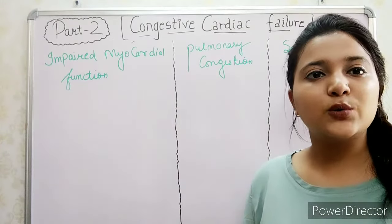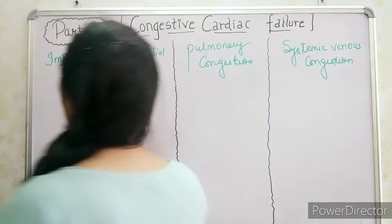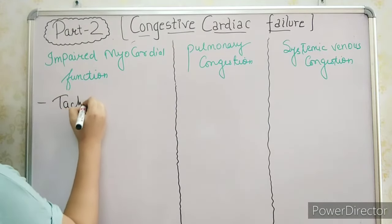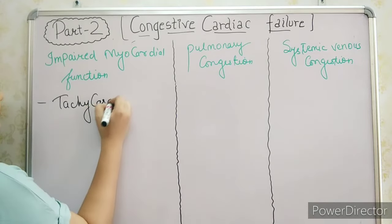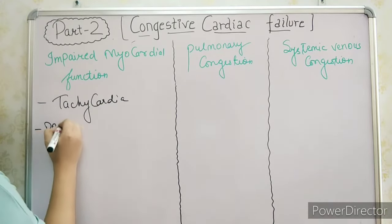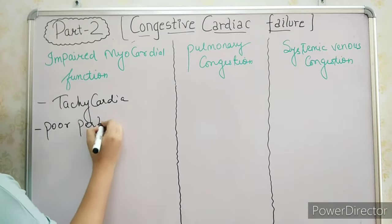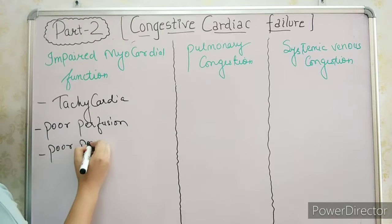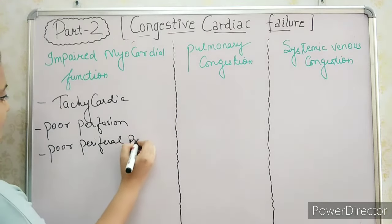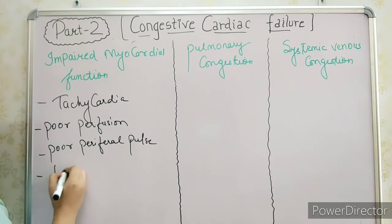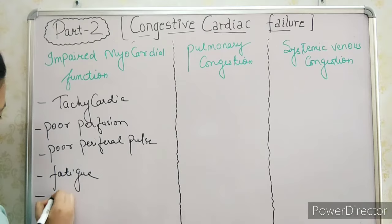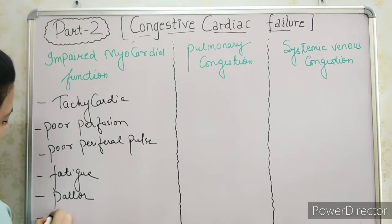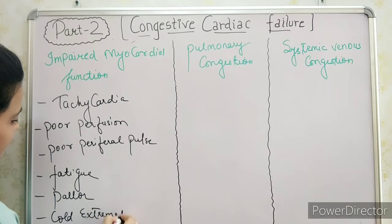There are some features of impaired myocardial function. First is tachycardia, second is poor perfusion, poor peripheral pulse, fatigue, pallor, and cold extremities.